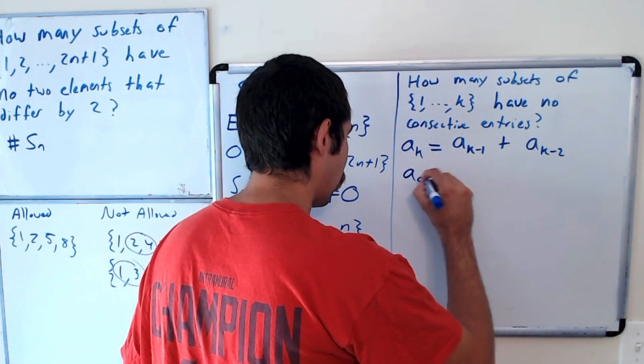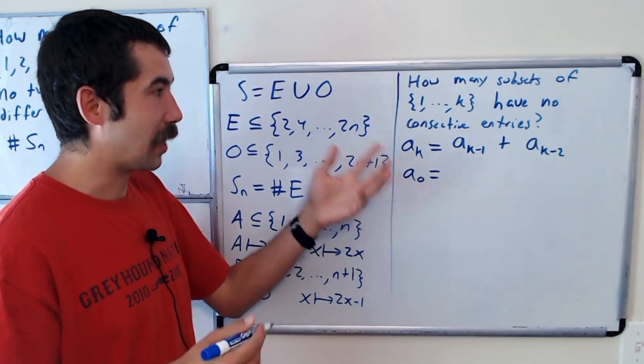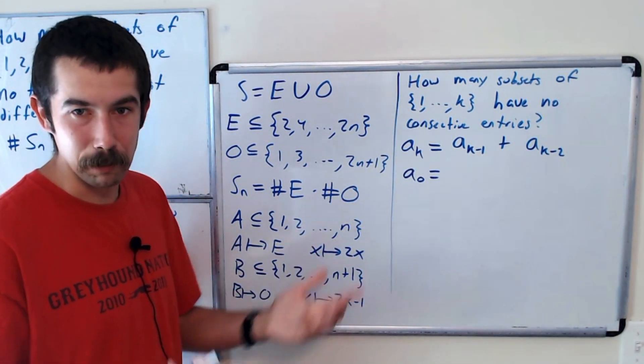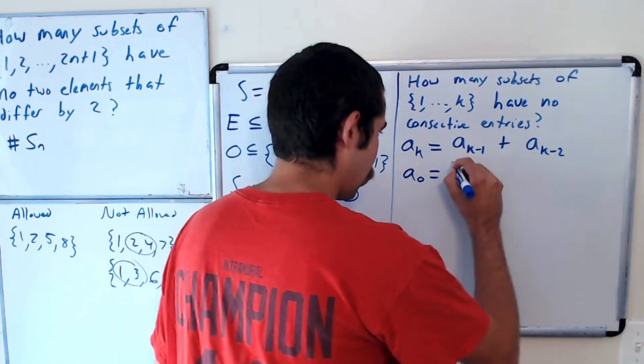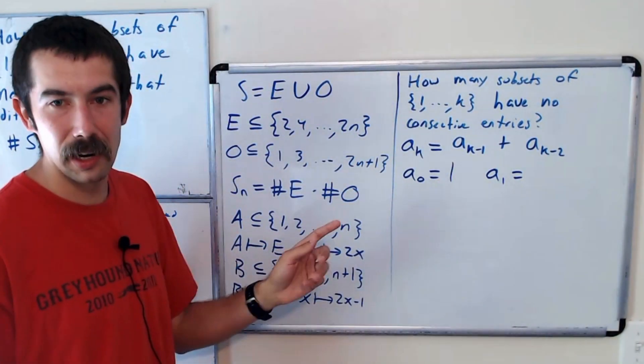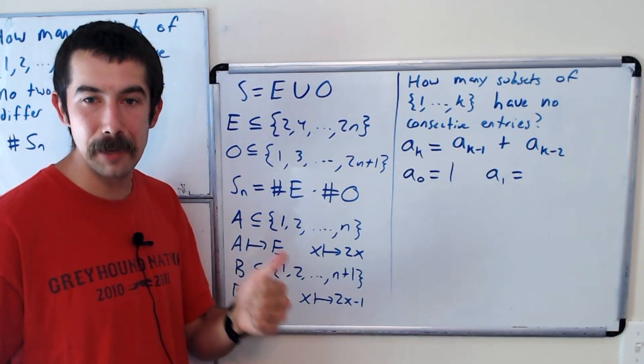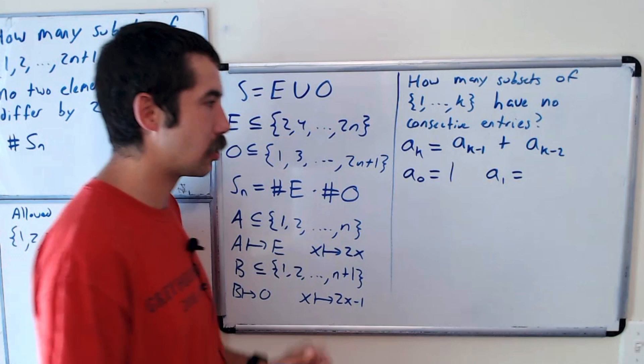Okay, so let's find what A sub 0 is. How many subsets of the empty set have no consecutive entries? There's 1. It's just the empty set. And A sub 1 is equal to how many subsets of 1 have no consecutive entries? It's either the empty set or just the set containing 1. So there's 2 of them.